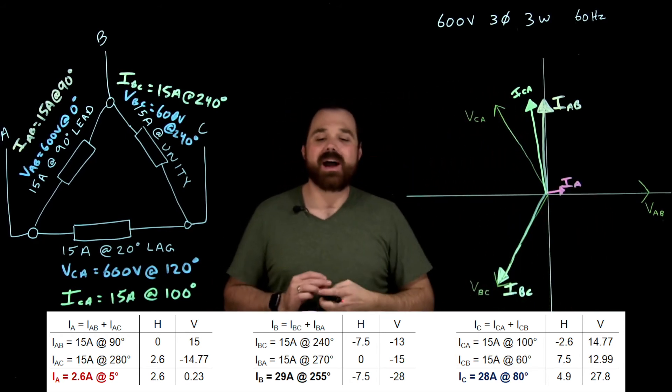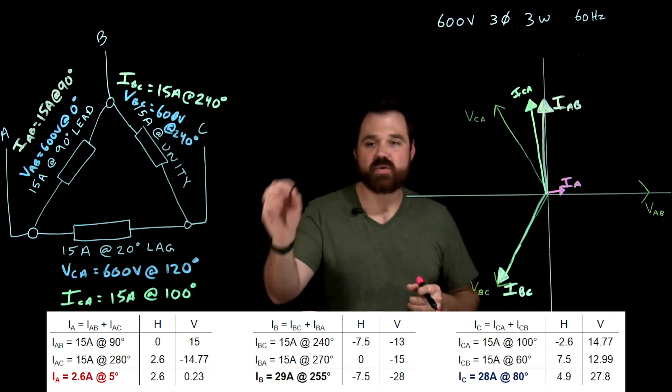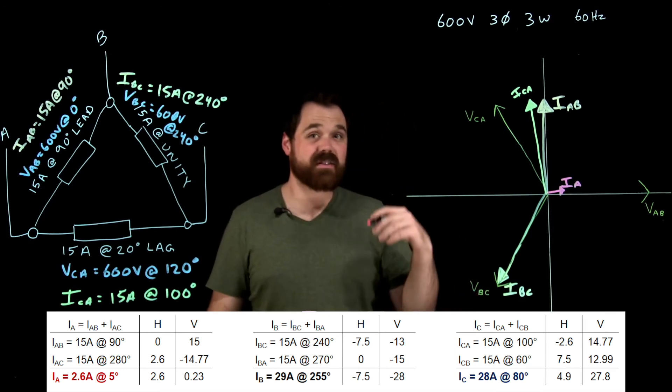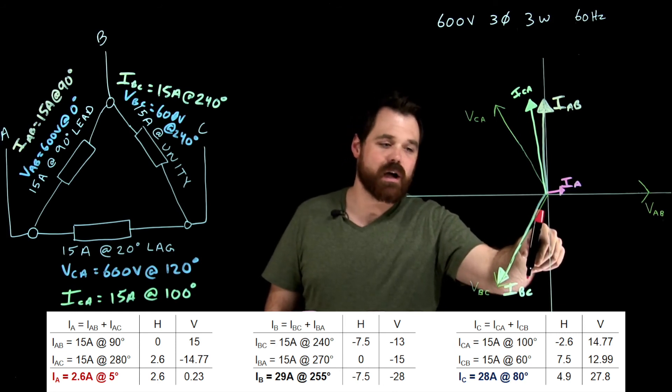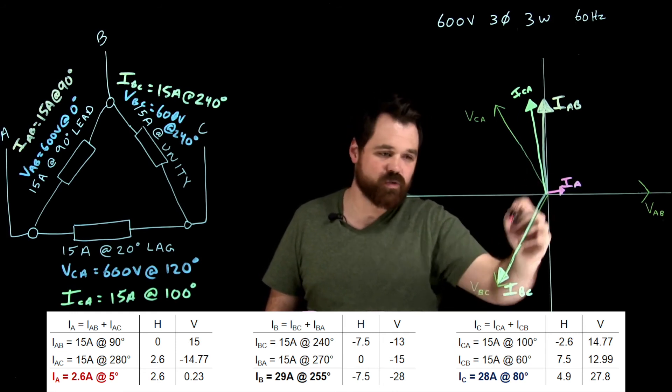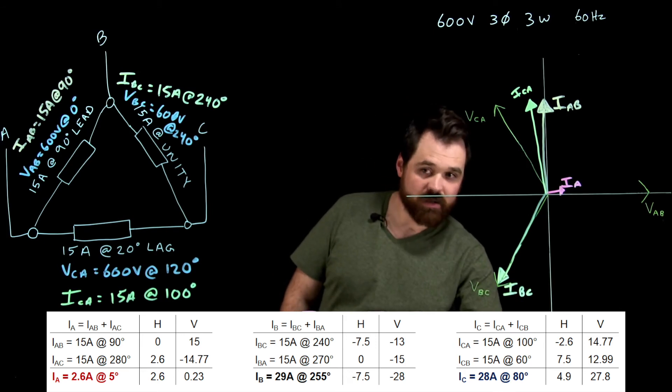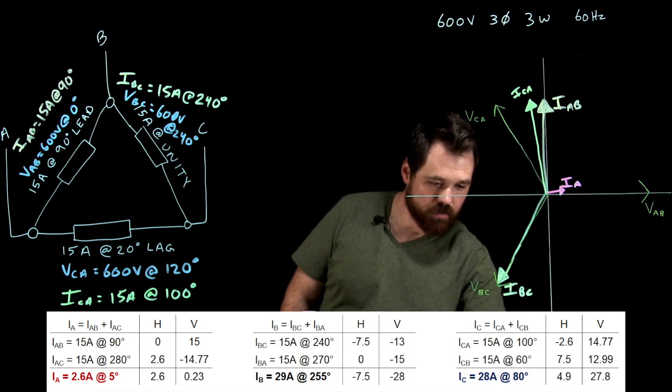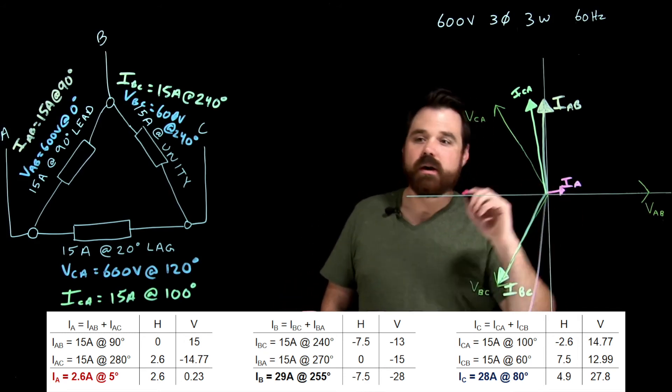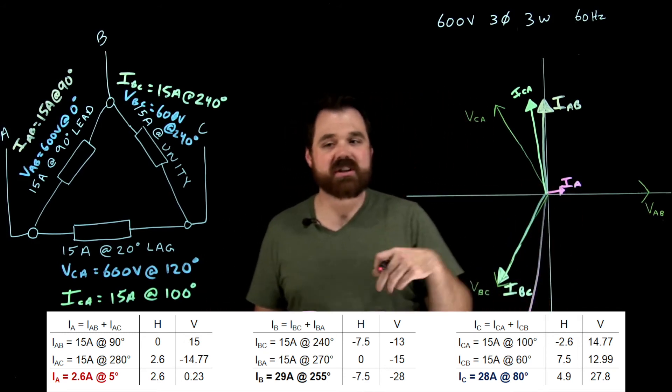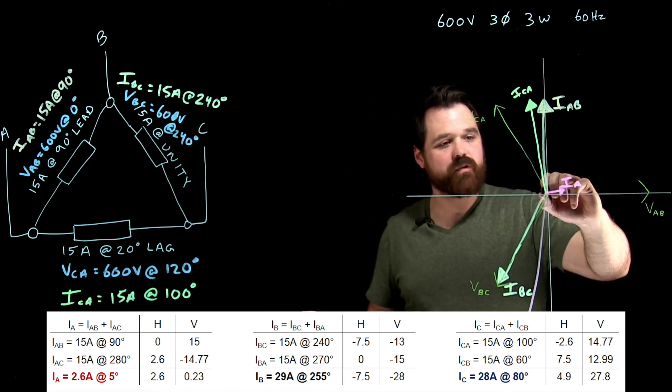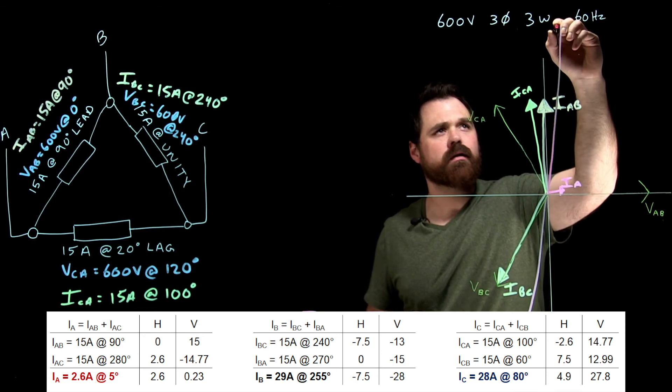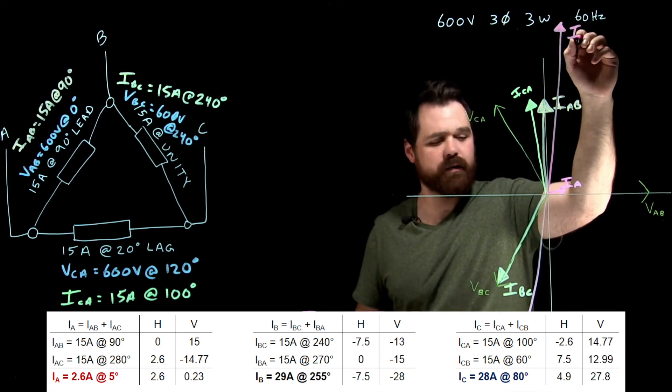So I get 2.6, that's gonna be really small at five degrees. And we can see that IB gives me 29 amps at 255 degrees. So I know that's coming straight down. And then IC is 28 amps at 80 degrees. So that's pretty long and pretty straight up. And that is IC.